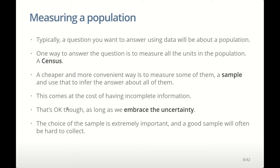A cheaper and more convenient way is to measure a sample of the population and then somehow infer from the sample about the population. That's usually done because in some cases it's either not possible at all to measure everyone, or it's not practical financially or from a time perspective. Whenever you have a sample instead of the full population, you don't have complete information. Inferential statistics is the process that allows us to go from that sample to the population, essentially embracing the uncertainty.